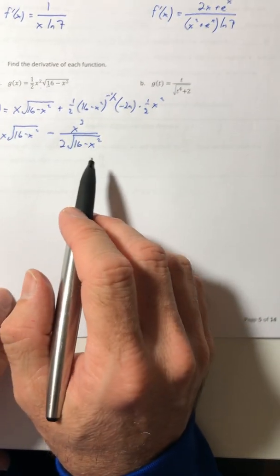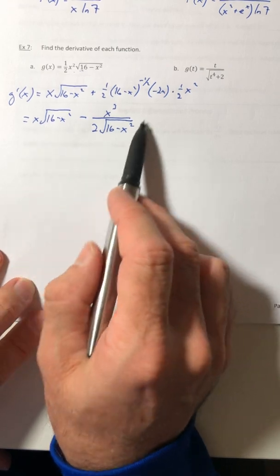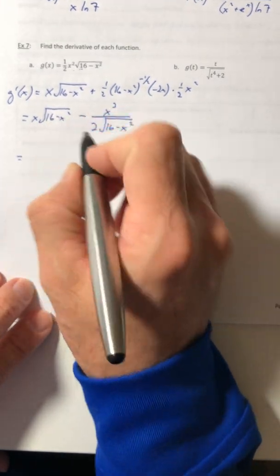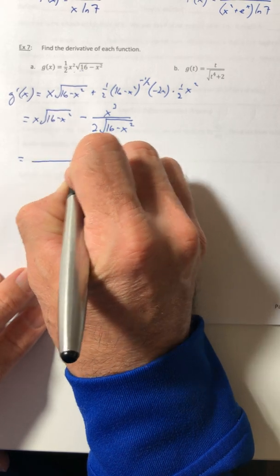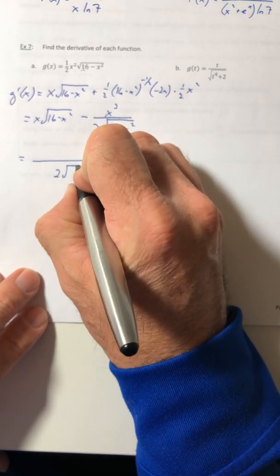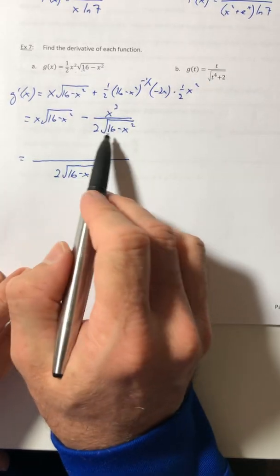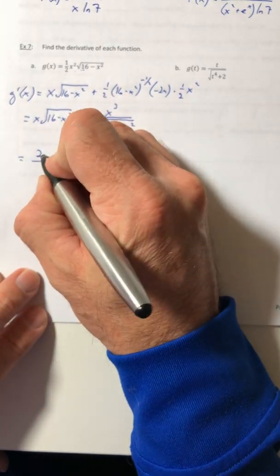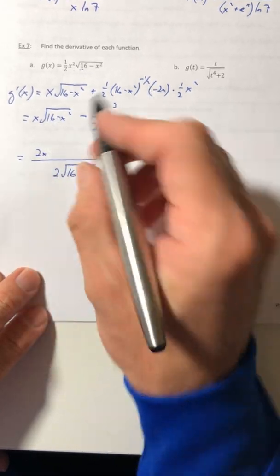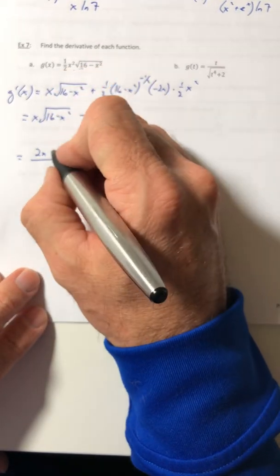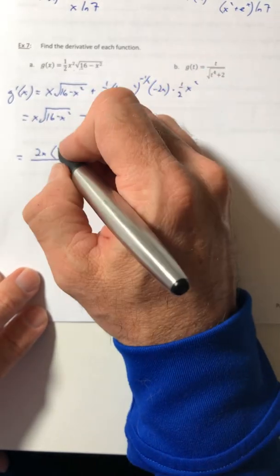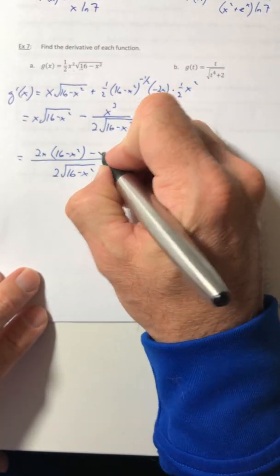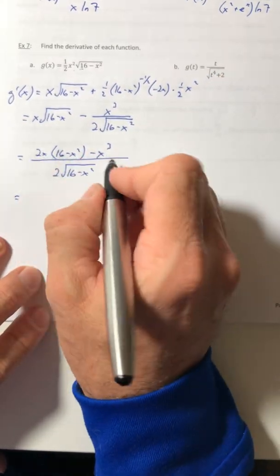So some of you are going, all right, yeah, we're done. Well, no, you're not. Because we want to get this into one term because of what's coming in the next chapter. So you got to combine it into one fraction. So just get a common denominator. So you got to multiply out that 2 root 16 minus x squared to this term. So that would be a 2x. And then the radicals are exactly the same. So the radical gets canceled off because you'd have a radical squared or square root squared. And then minus x to the third.